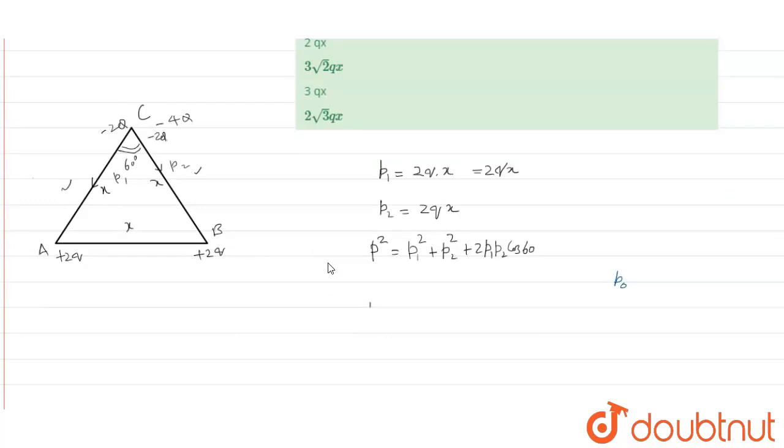Then p square is equal to p0 square plus p0 square plus 2p0 square cos 60 is half.